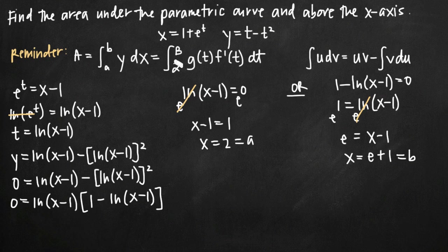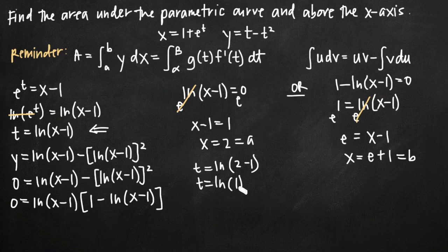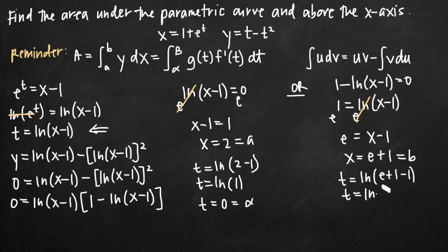These are limits a and b, but we want alpha and beta. To get them, we plug both values into our equation for t. For x equals 2, we get t equals natural log of 2 minus 1, which is natural log of 1, which equals 0. So alpha equals 0. For x equals e plus 1, we get t equals natural log of e, which equals 1. So beta equals 1.